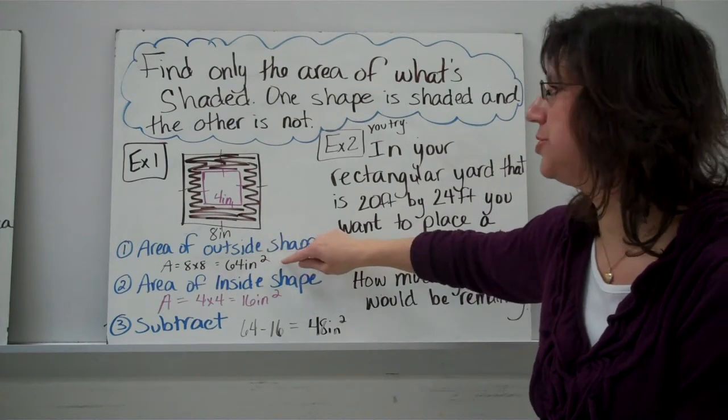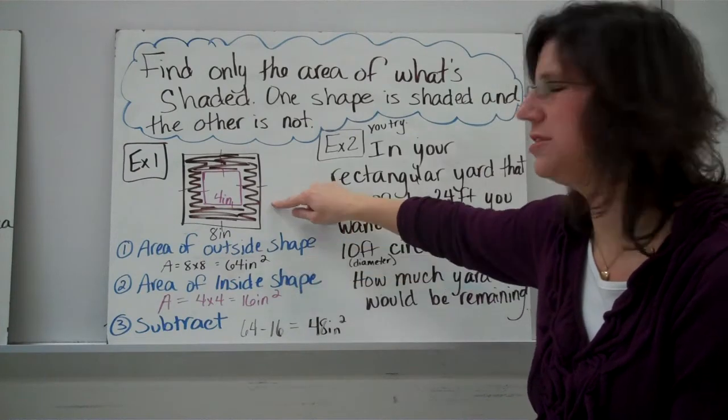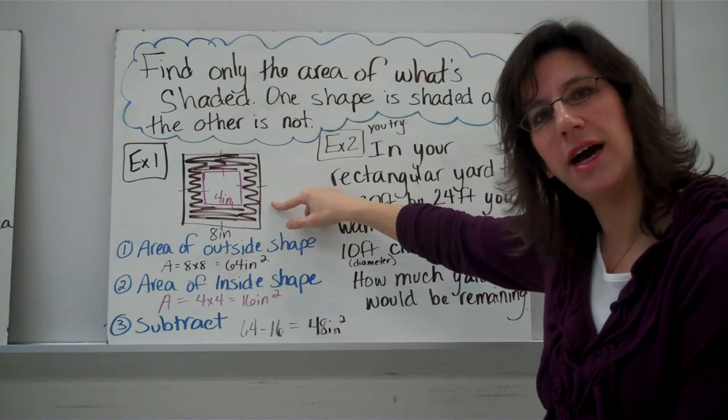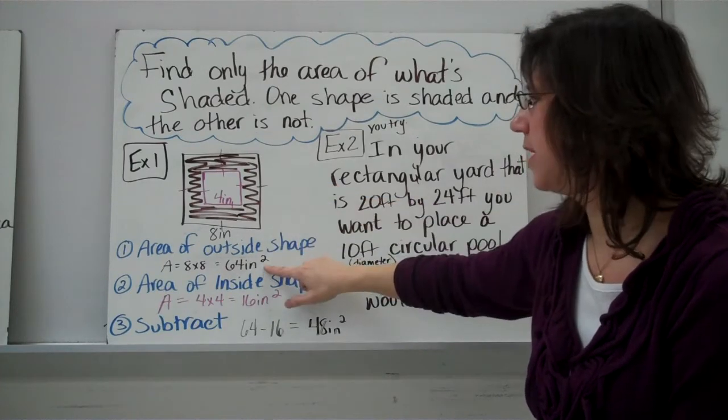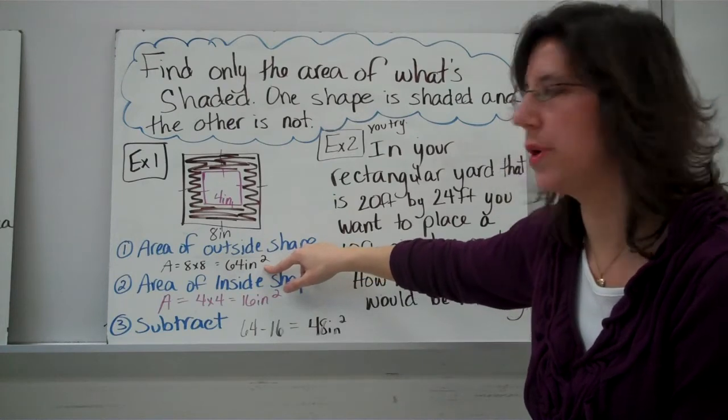Alright, so the first thing you're going to do is you're going to try to find the area of the outside shape. The outside shape. Now, as you can see here, the outside shape is a square. So, the area of a square, you're going to multiply the side times another side. So, I've done that for you. 8 times 8 is, of course, 64 inches squared.